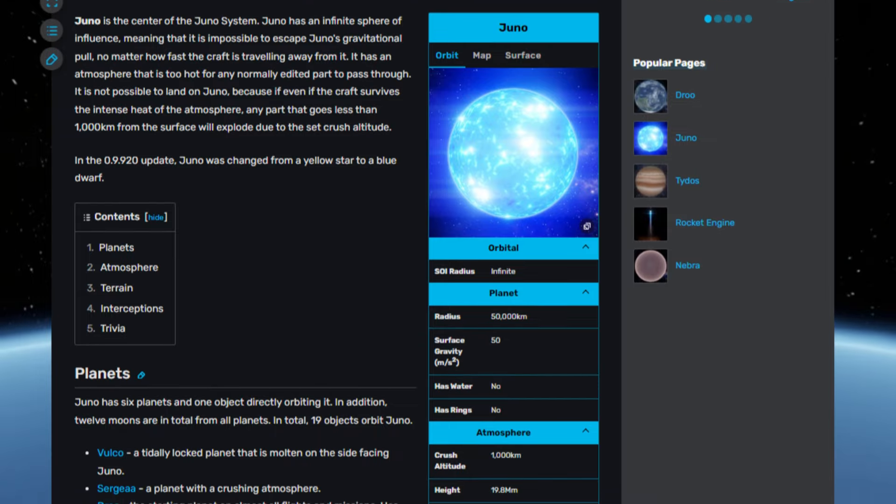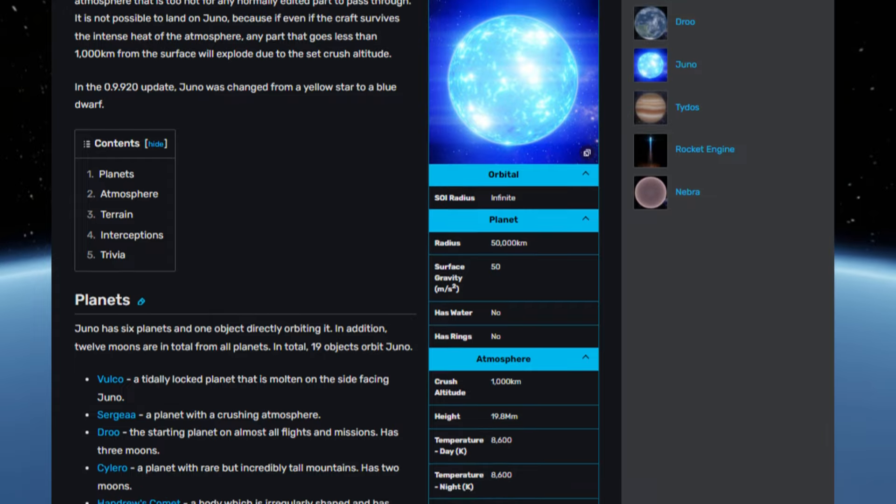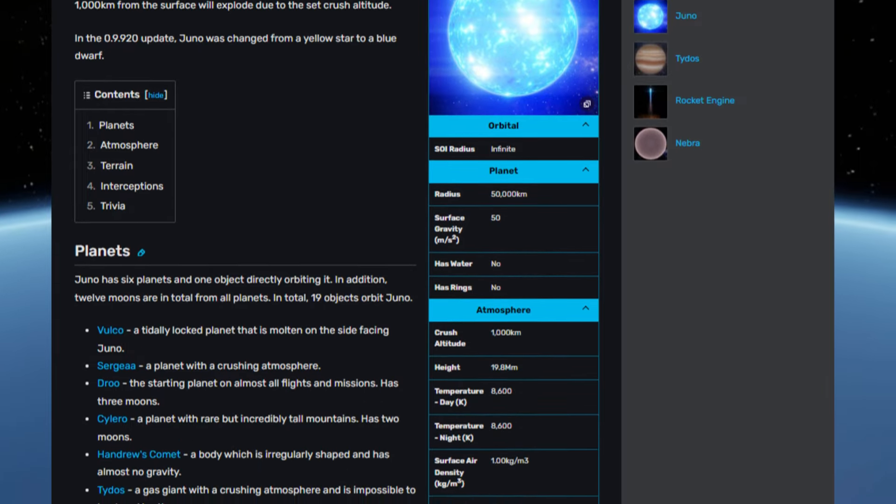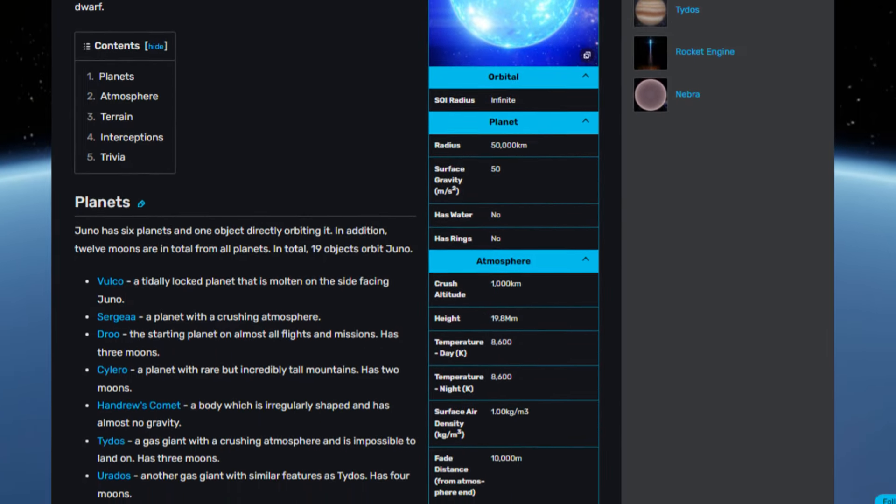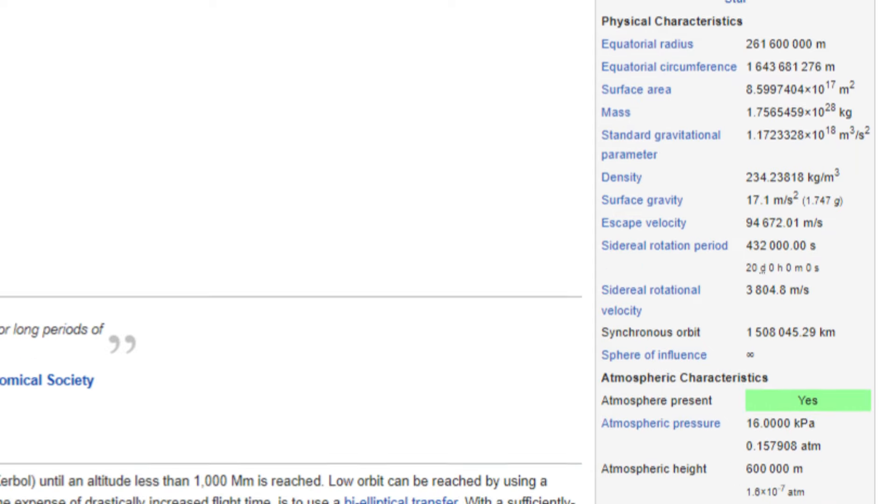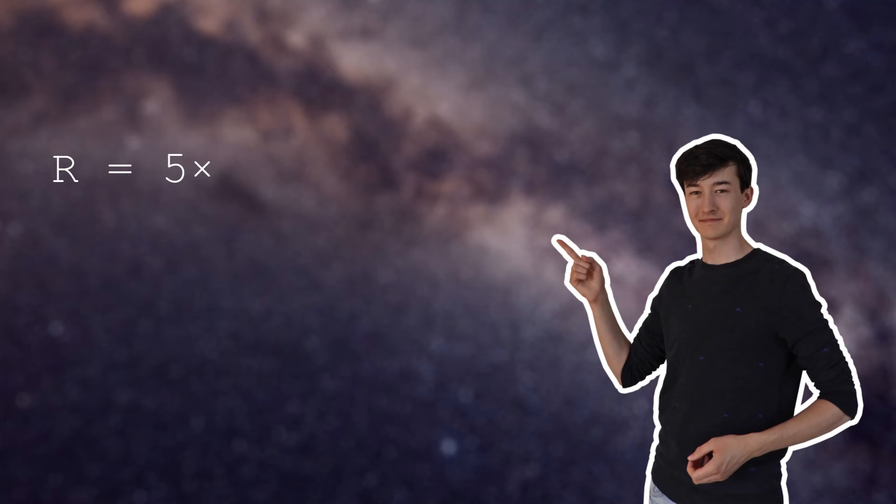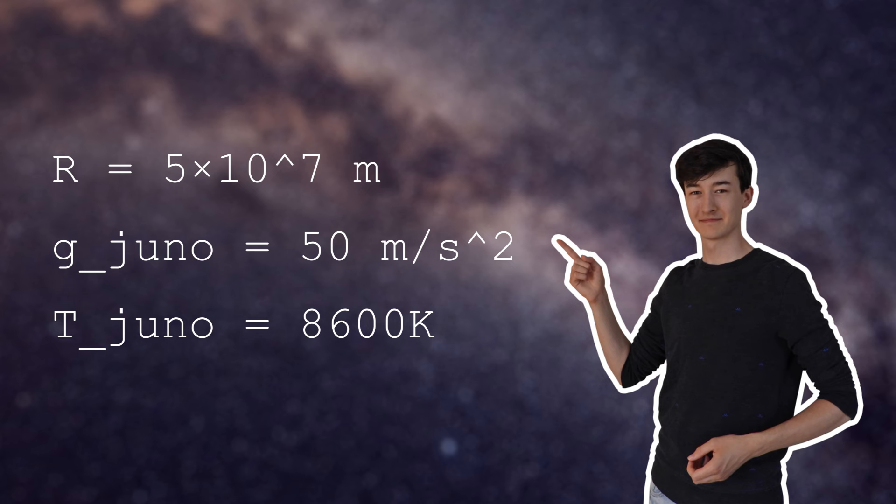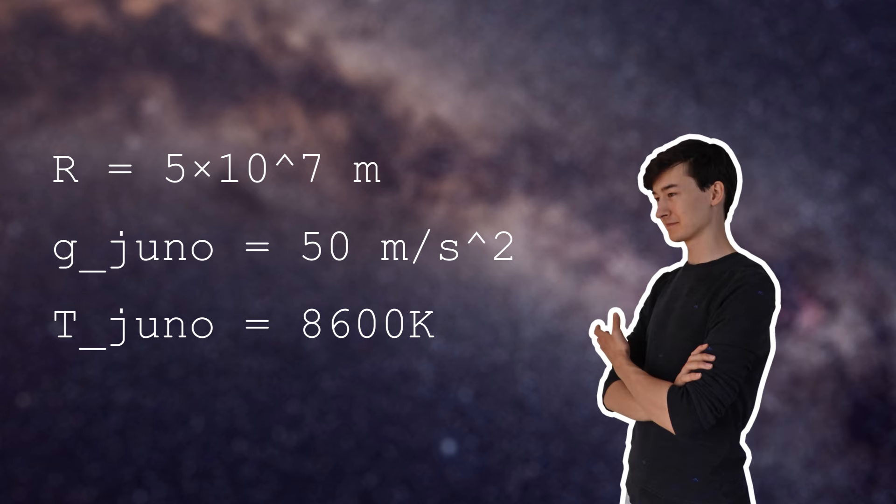I will start with Juno itself. When I looked at the wiki page to get some numbers regarding this celestial body, I noticed that these pages are somewhat lackluster when compared to the wiki pages of KSP. I mean, look at this. This is all they list about Juno, and compare that to everything about Kerbol in KSP. Luckily, these parameters allow us to calculate some of the other parameters, like the mass of the star and its luminosity.